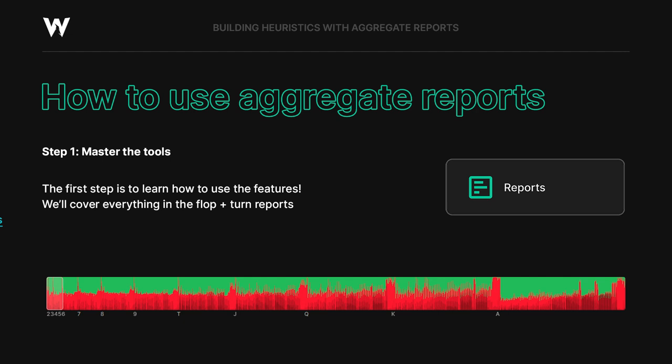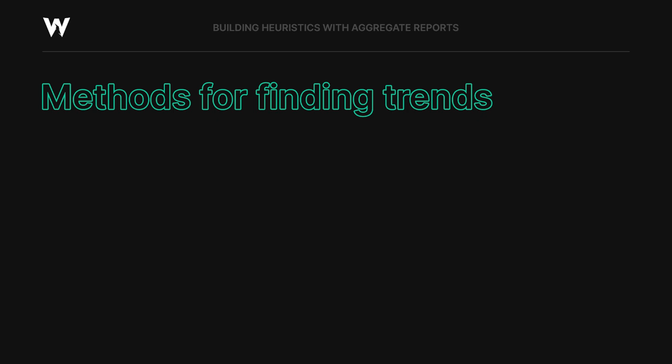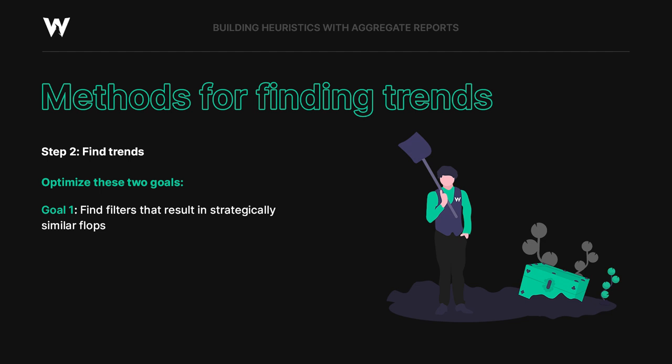Step two, we're going to talk about how to find trends. When you're searching for big trends, you are trying to optimize two goals: one, find filters that result in strategically similar flops; and two, we want those filters to apply to a wide range of flops. If you get too niche, you end up with hundreds of filters that are impossible to apply. If you get too broad, the boards aren't strategically similar enough. So our goal is to group boards together that are strategically similar so that we can learn more easily going forward.